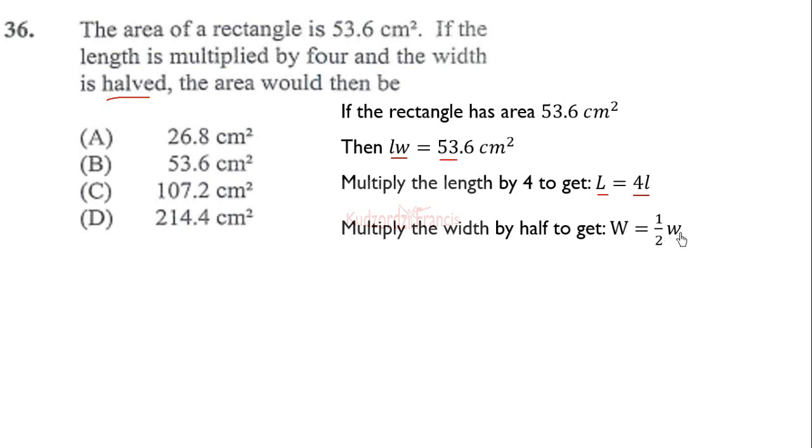Now we multiply the new dimensions, length times width. But we know that the original length times width equals 53.6. Let's substitute them into the formula. The new area is 4L times W/2, which equals 2LW. We know LW has the value 53.6.